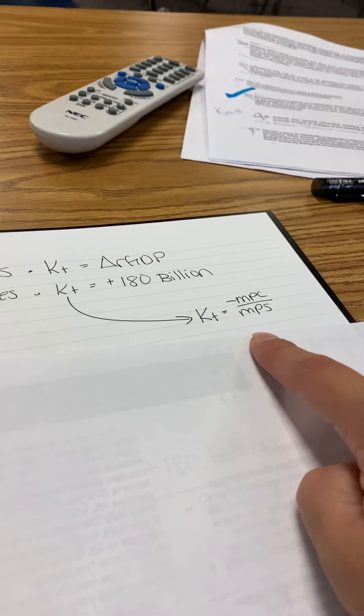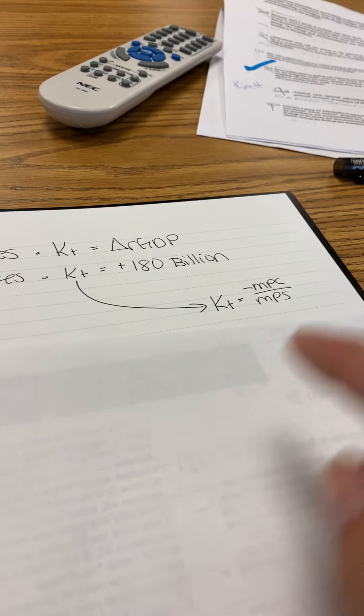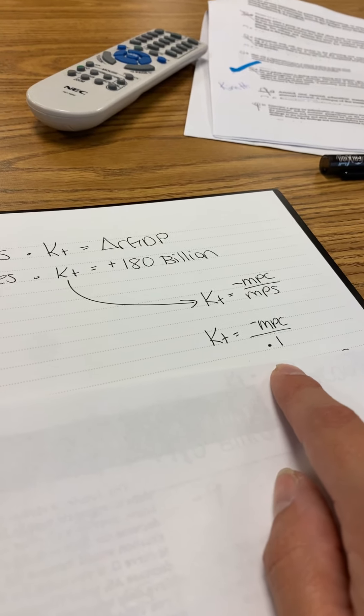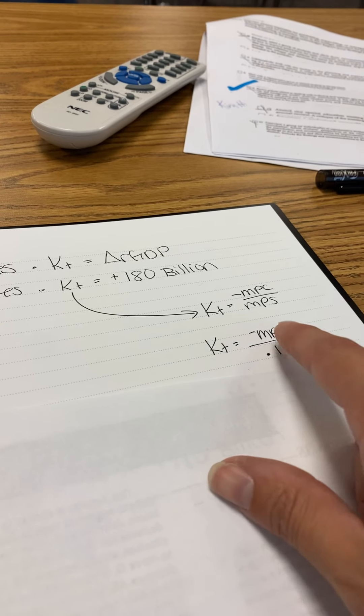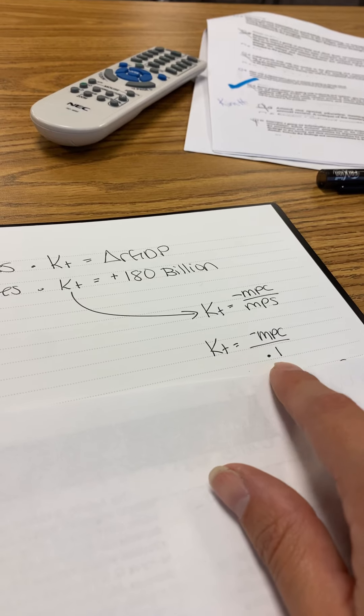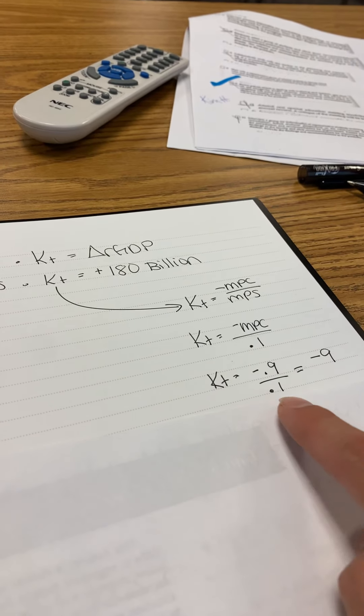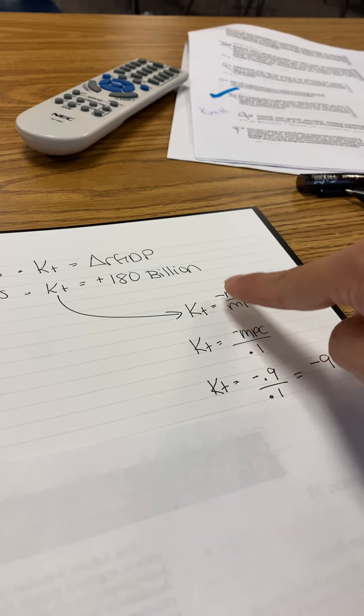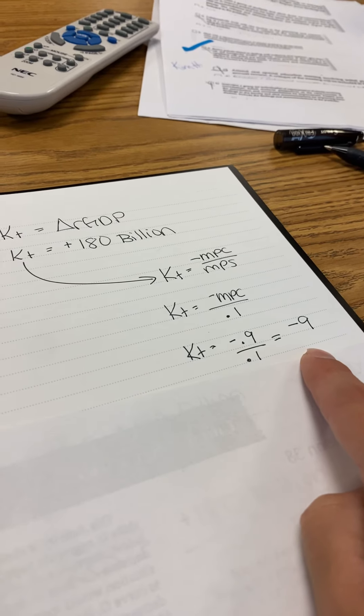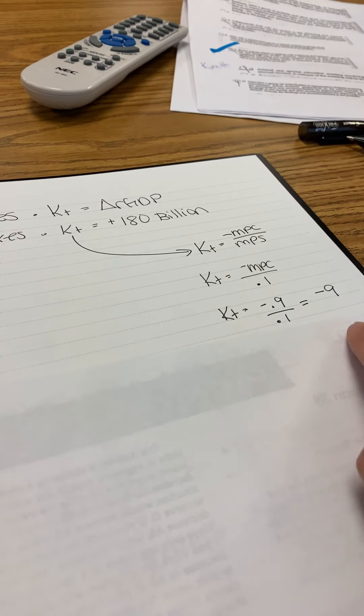Here's the formula for KT, the tax multiplier. Negative MPC over MPS. MPS was given to you in the problem, it was 0.1. MPC plus MPS equals 1, so if the denominator is 0.1, the numerator's got to be 0.9. We're making it negative because that's the formula. Negative 0.9 over 0.1 is negative 9. So that is KT.